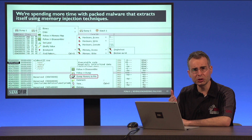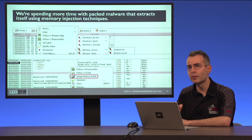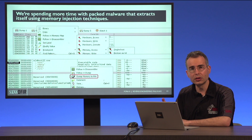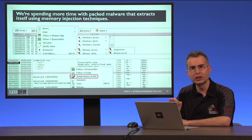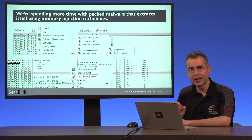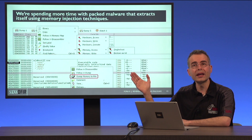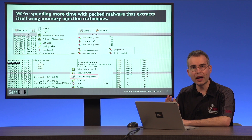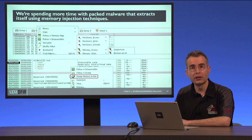Using x64dbg, we're now looking more closely at malware that performs code injection into other processes and sometimes into its own process. Tools like x64dbg are quite good at allowing us to find code that might have been created in memory of the malicious process or of a legitimate process. We can find that code, extract it in its unpacked form, and analyze it further if the need arises.